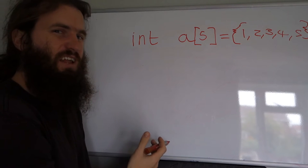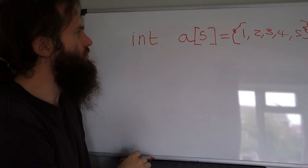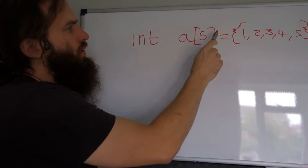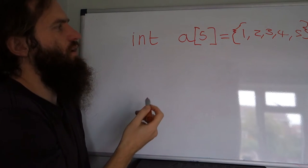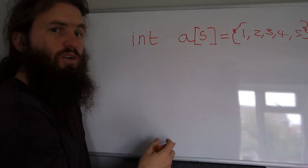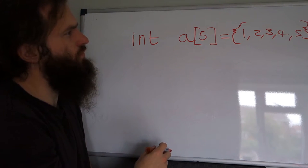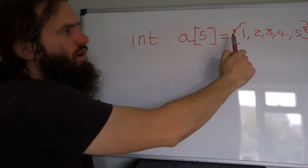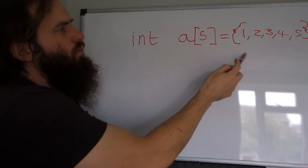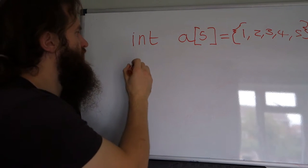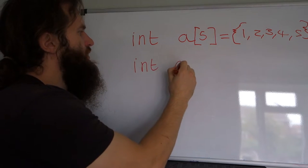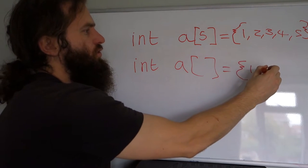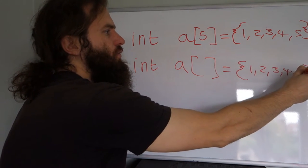We can also just declare the array as int A[5]; with a semicolon, and the array will have undefined values initially. We don't have to specify the size if we provide the values, because the C compiler will infer the size from the number of values provided. So int A[] = {1, 2, 3, 4, 5} is also valid.